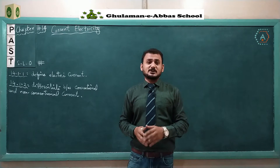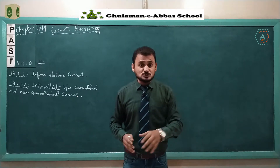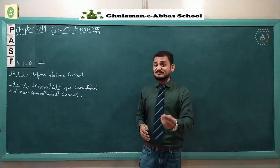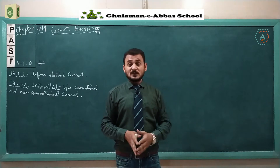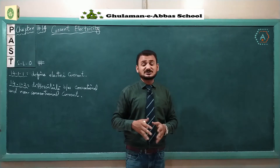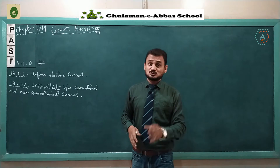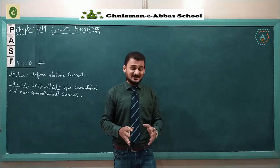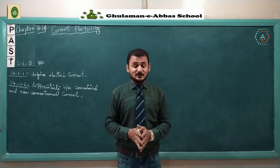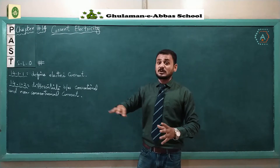We know that in a neutral atom there are two parts: one is the nuclear part and the other is the extra-nuclear part. The nuclear part means protons and neutrons are bound in the nucleus, while in the extra-nuclear part, negative charges or electrons revolve. There is a force of attraction between the positively charged nucleus and the negatively charged electrons, so the negative charges we call electrons are bound within the atom and cannot move easily. Enough energy is required to remove them from the extra-nuclear part.